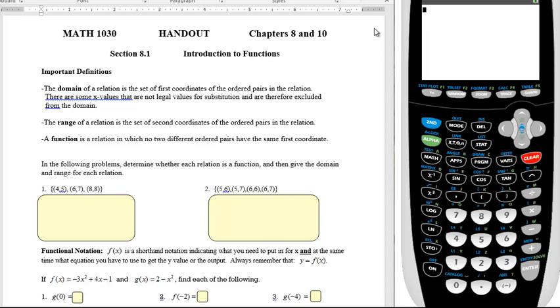The domain of a relation is the set of first coordinates of the ordered pairs in the relation. So if you have an ordered pair, remember it's normally x, y, so they're referring to the x values. There are some x values that are not legal values for substitution and are therefore excluded from the domain, but we'll talk about that more a little bit later.